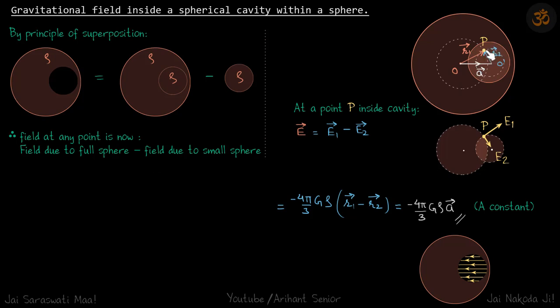At this point P inside the cavity, using this concept we can say field at this point P is field due to the whole sphere, so that will be E1 vector minus field due to the sphere which is kept at this point, so minus E2 vector. This is much more clear in this picture.